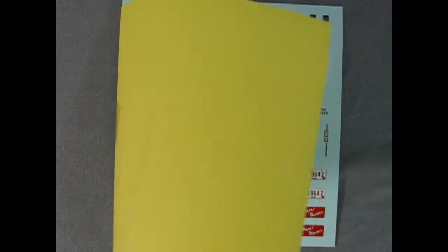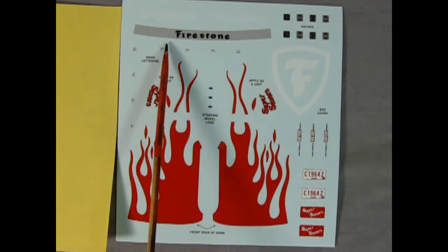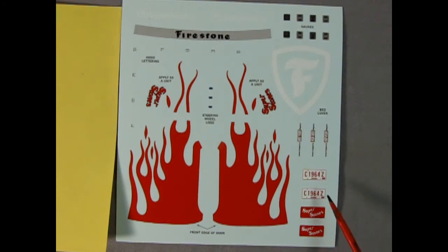And now the moment you've been waiting for. What do the decals look like? So let's just fold up our paper and see. There we have it. Our nice red flames as well as the big Firestone emblem which goes on that tonneau cover. There's our Super Stones decal which will go on the side as well as the Firestone visor decal. And we have Ohio license plates C1964Z.